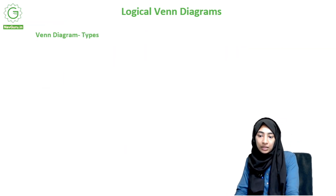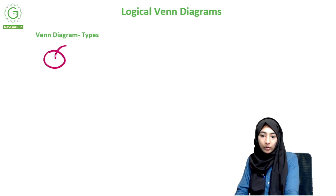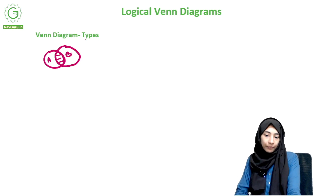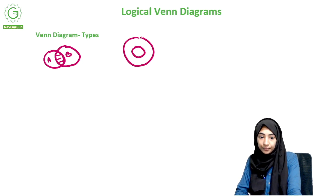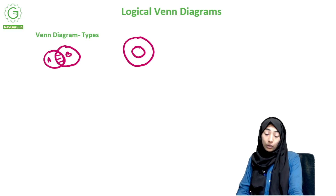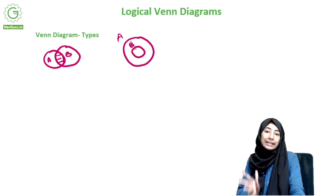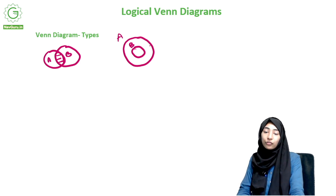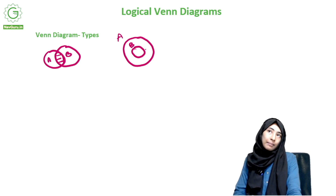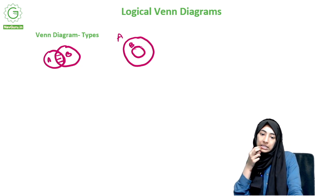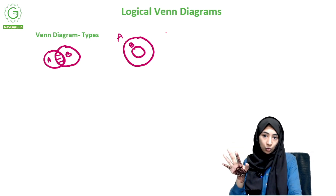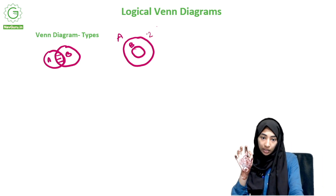Let's get on to the types of Venn diagram. The first type is the one we discussed - you have two overlapping circles, this is A, this is B, and this is A intersection B. The second type is when you have a circle and then another circle which contains the first circle. The bigger one is A and the smaller one is B - this means B is fully contained in A.